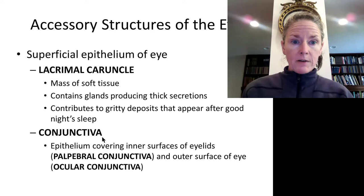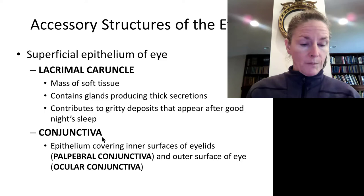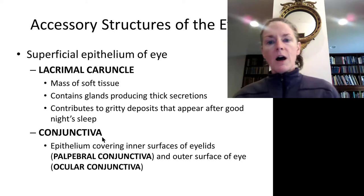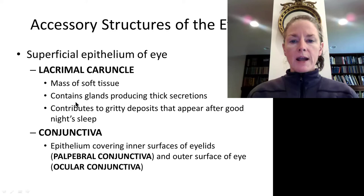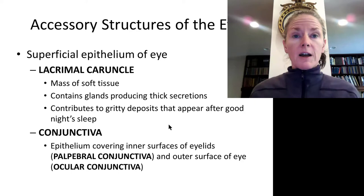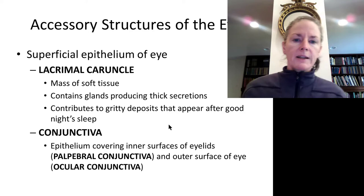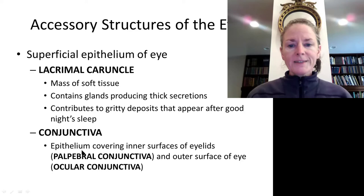Looking at the medial part of the eye, within that medial canthus we have what's called the lacrimal caruncle—that soft pink tissue in the medial corner of the eye. It creates secretions that you may notice as crusty material in your eyes, especially after a long sleep or exposure to pollen and dust.